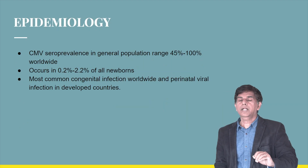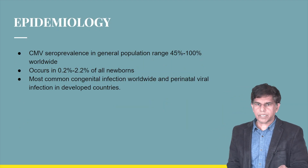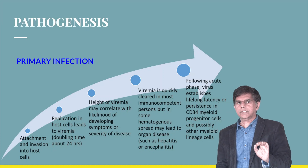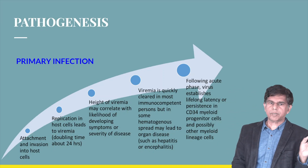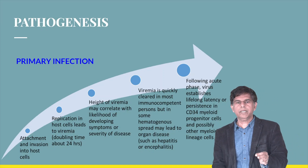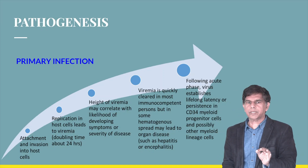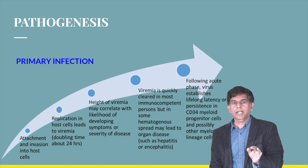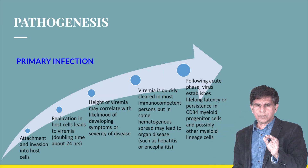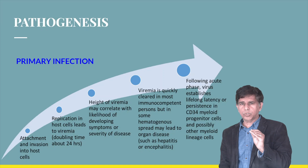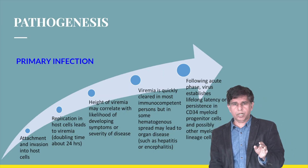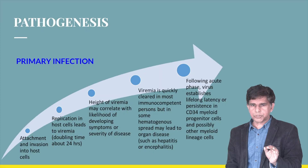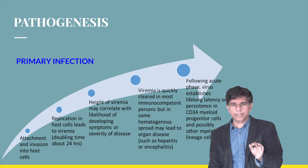Pathophysiology: there are two types — primary and secondary infection. In primary infection, the virus attaches and invades the host cell, then replicates, leading to viremia. The height of viremia may correlate with the likelihood of developing severe disease. Viremia is quickly cleared in most immunocompetent persons, but hematogenous spread can lead to hepatitis or encephalitis.